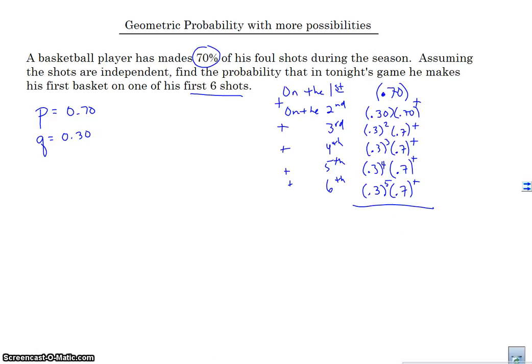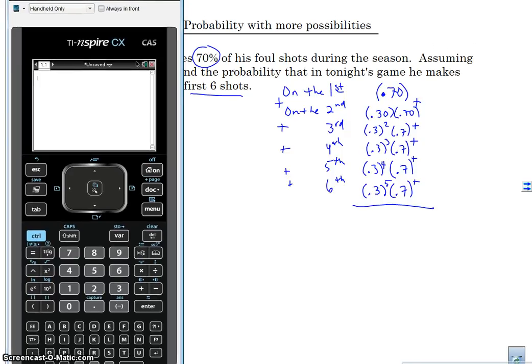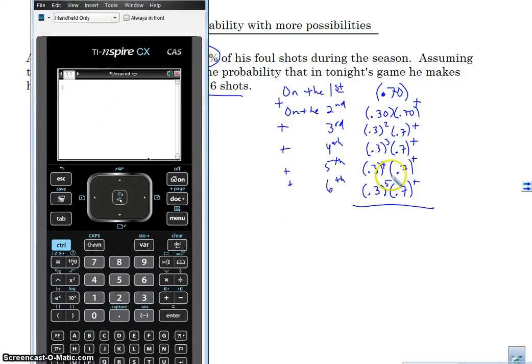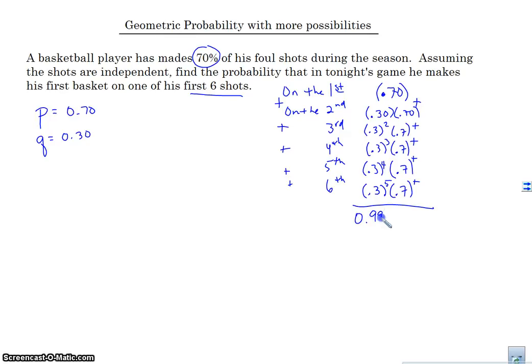Alright, so let's pull up the calculator here. So we've got our calculator here. And what I'm going to do is I'm going to enter in all of this stuff, right, so that we can see what this probability is. Okay, so let's go ahead with 0.7 plus 0.3 times 0.7 plus 0.3 squared times 0.7 plus 0.3 to the third times 0.7 plus 0.3 to the fourth times 0.7 plus 0.3 to the fifth times 0.7. And we get 0.999271.